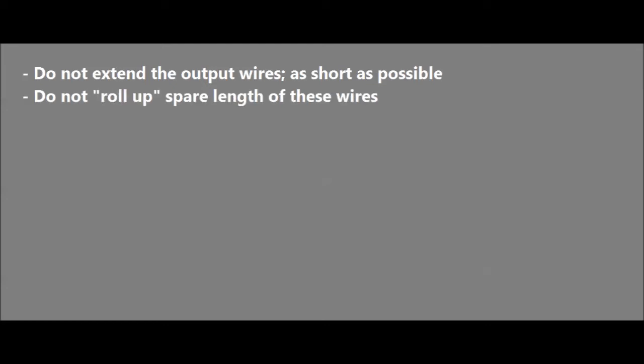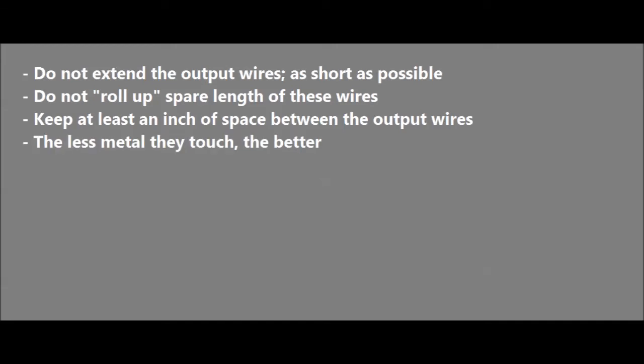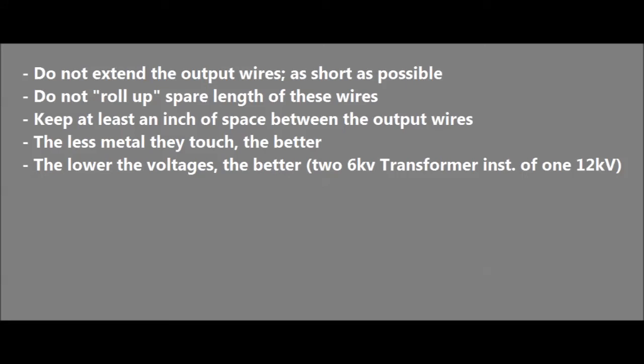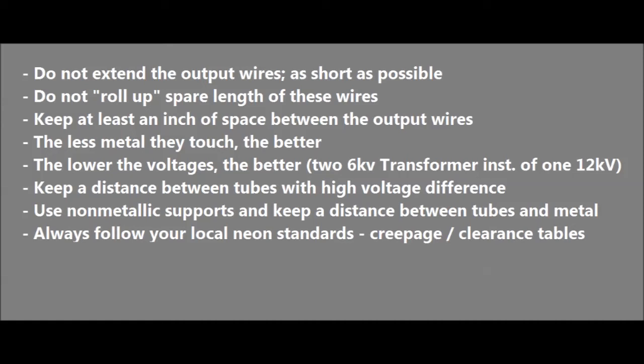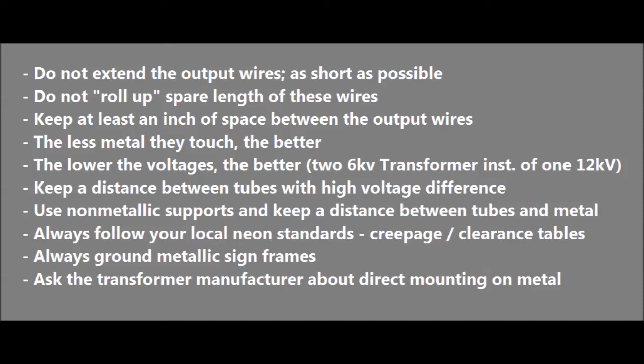So here's an incomplete list of hints for electronic or solid state transformer use. Do not extend the output wires and cut them as short as you can on your sign. Do not roll up spare length of these wires. Keep at least an inch of space between the output wires of the transformer. The less metal these wires touch the better. The lower the voltage is the better so using two 6kV transformers might be better than using one 12kV. Keep at least a thumb of distance between tubes with a high voltage difference. Use non-metallic tube supports and keep a distance between tubes and metal. Always follow your local neon standards and see if they have creepage and clearance tables. Always ground metallic sign frames and ask your transformer manufacturer if their transformer can be mounted directly onto metal or not.